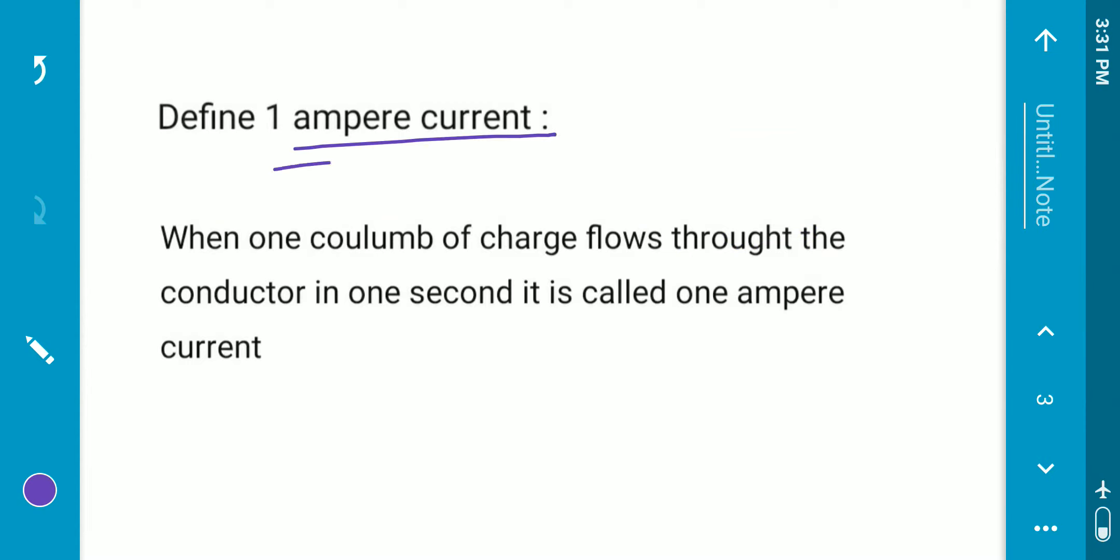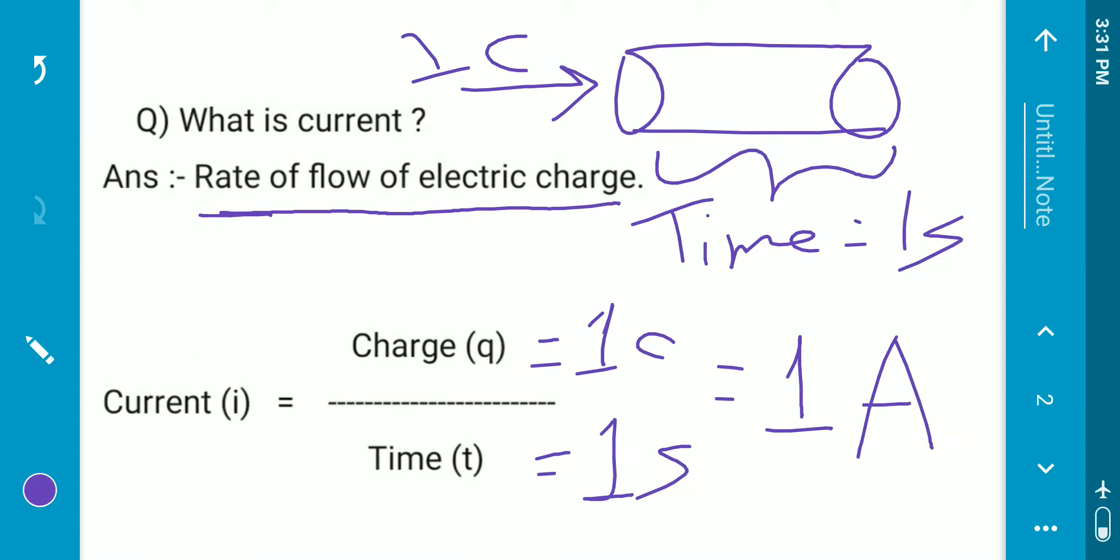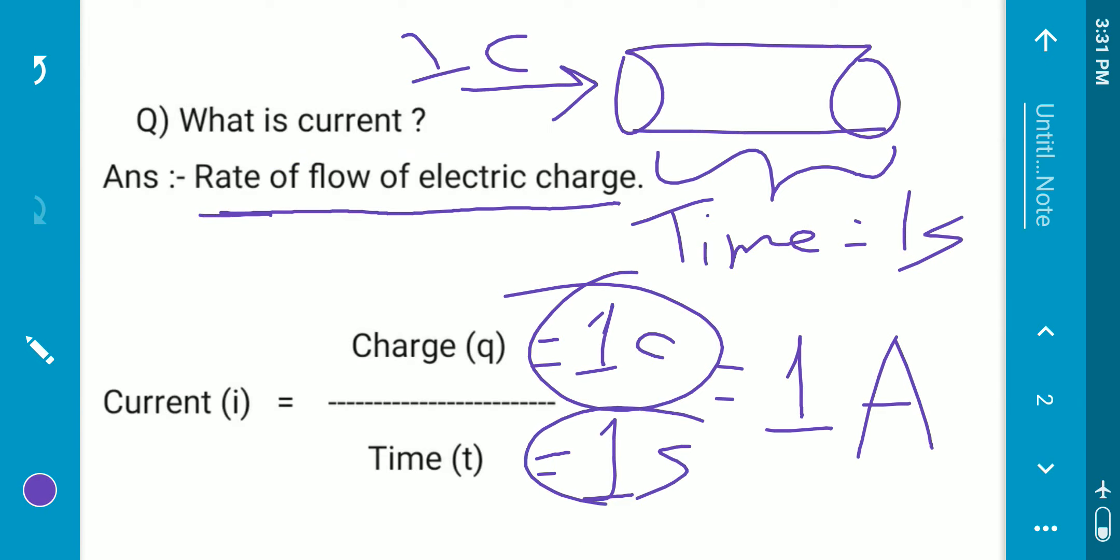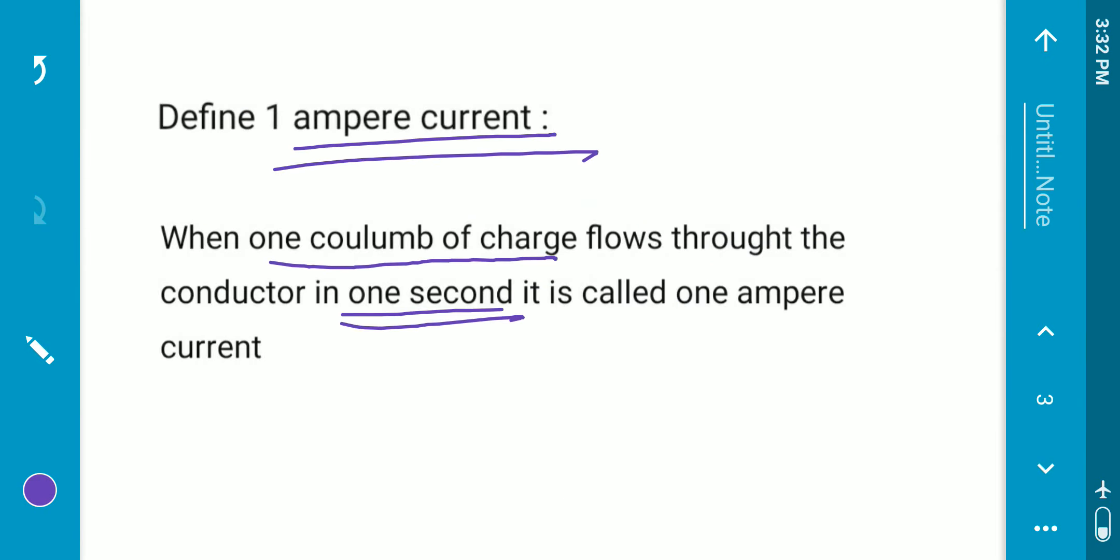So 1 ampere current means when 1 Coulomb of charge flows through the conductor in 1 second, then it gives 1 ampere current.